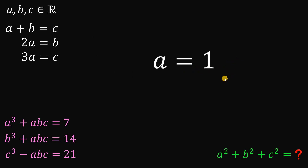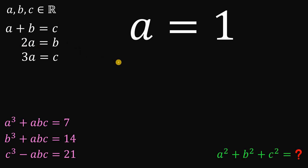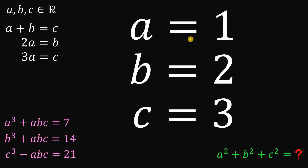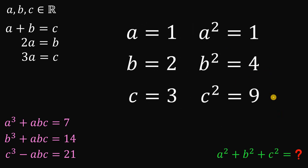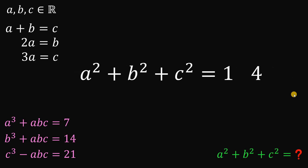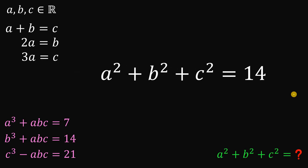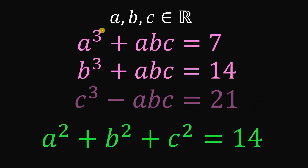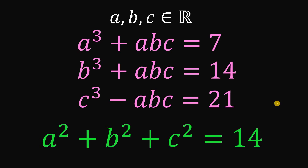Since a equals 1 and b equals 2 times a, b equals 2. And c equals 3 times a, so c equals 3. We want the sum of their squares: a squared equals 1, b squared equals 4, c squared equals 9. Their sum is 1 plus 4 plus 9, which equals 14. Therefore, given these three equations wherein a, b, c are all real numbers, the numerical value of a squared plus b squared plus c squared equals 14. And we are done.